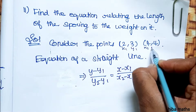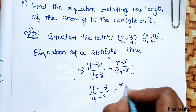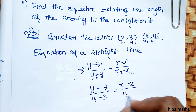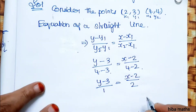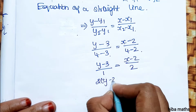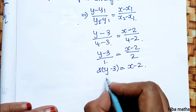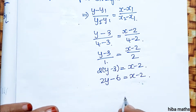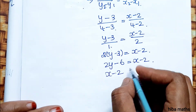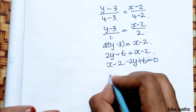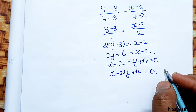The equation is: (y − y1)/(y2 − y1) = (x − x1)/(x2 − x1). Here x1=2, y1=3, x2=4, y2=4. Substituting: (y − 3)/(4 − 3) = (x − 2)/(4 − 2). Cross multiplying: 2(y − 3) = 1(x − 2), giving 2y − 6 = x − 2. Rearranging: x − 2y + 4 = 0. This is the equation of the straight line.